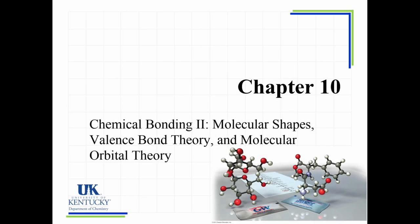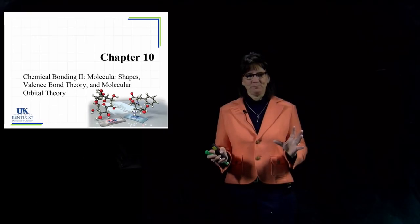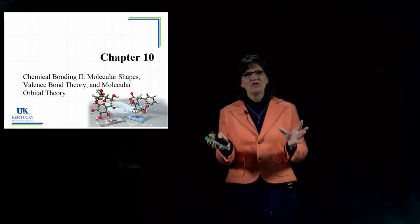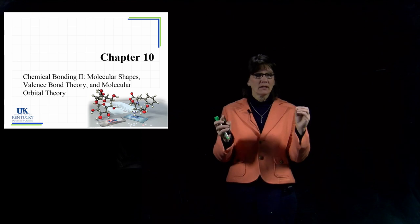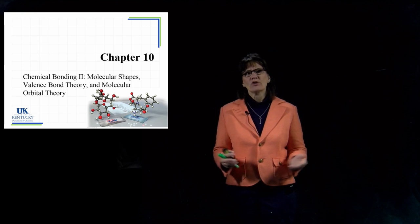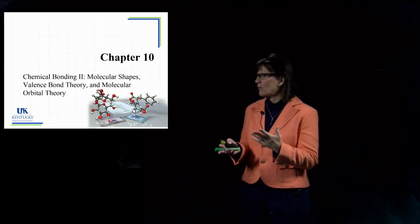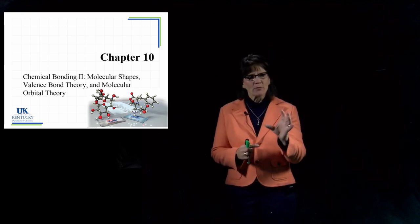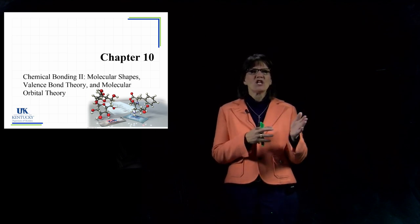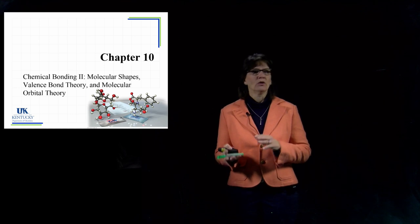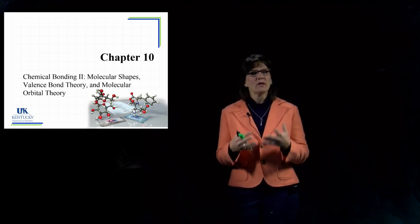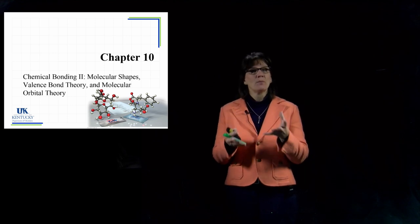Now that we know where the electrons live around an atom, and we can do a Lewis structure which gives the location of the valence electrons, we're ready to learn what we can determine from that Lewis structure. We're going to start looking at some bonding models, and in this chapter we'll be looking at the shapes of molecules. Once we know the shapes, we can make a judgment about the polarity of the molecule — whether it's polar or non-polar — and that's important because the properties of substances depend upon polarity.